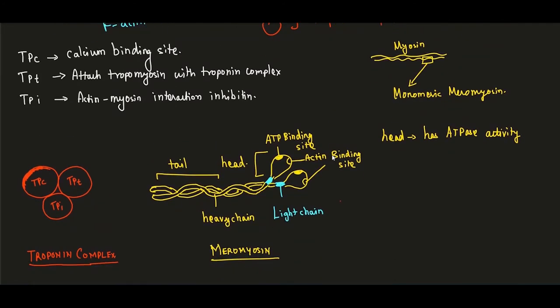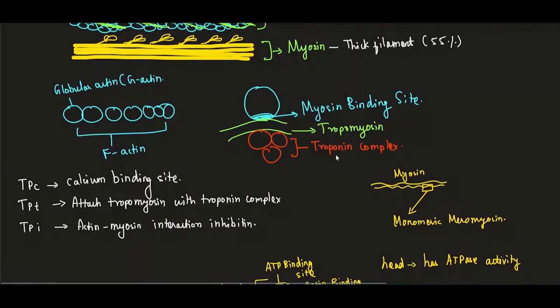The myosin head has ATPase activity and contains two important binding sites: an ATP binding site and an actin binding site. These two sites on the myosin head are critical for cross-bridge formation during muscle contraction.